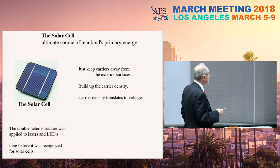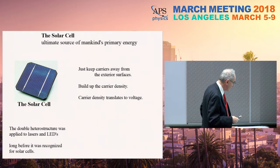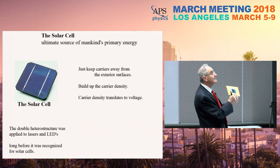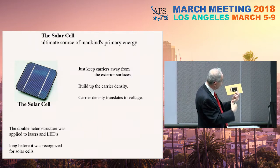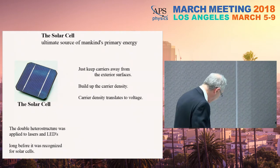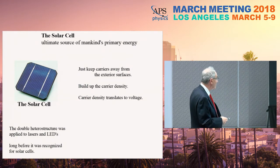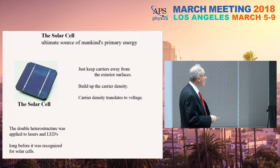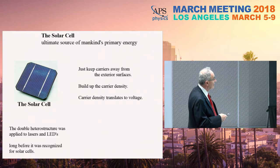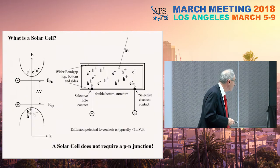For the solar cell, it's a similar idea. The solar cell will ultimately be the prime energy source for mankind because the cost keeps going down. The version I have here is hardly more than a piece of paper — it's completely flexible — and if you look closely, it's picking up the dim room lights. There's enough light here to light up the blue LEDs on top. The double heterostructure becomes very important in photovoltaic cells, though it was originally applied to lasers and LEDs — it was literally decades before the double heterostructure was recognized as essential for solar cells.